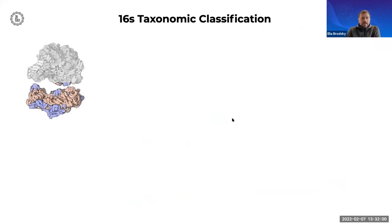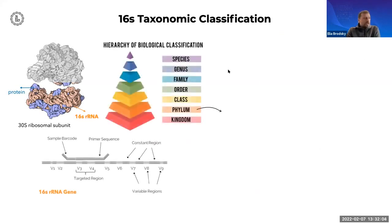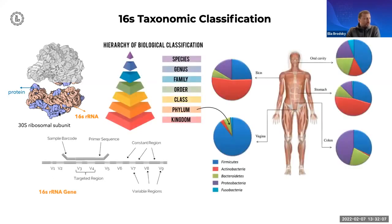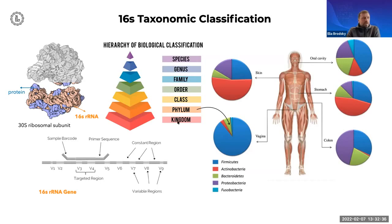16S taxonomic classification is based on sequencing a targeted amplified region, which means we lose the actual specific abundance of that gene in the sample, and instead look at composition — proportionate abundance. Using the different levels of taxonomic classification, we can assign proportions, and in baseline studies we can look at individual body regions and establish compositions that are stable across several individuals.